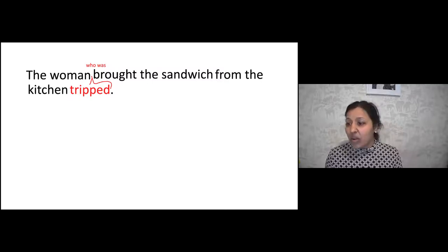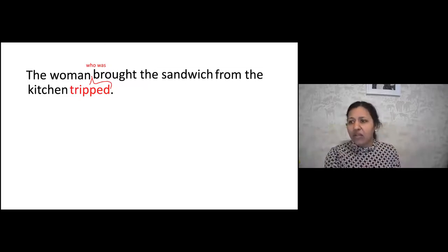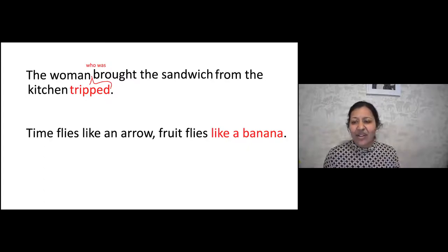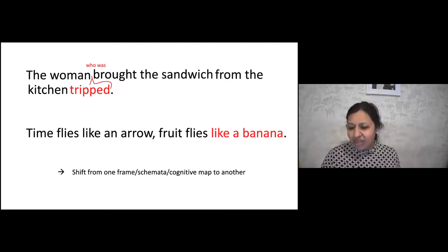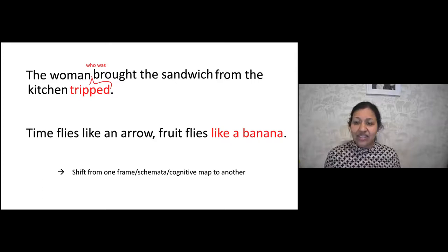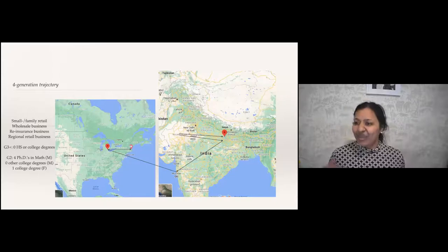The way to interpret it is that the woman tripped, and she was the one brought from the kitchen — this is what you call a classic garden path sentence in cognitive science. It causes a reorientation in your brain of how to understand the previous parts of the sentence. Here's another one: 'time flies like an arrow, fruit flies like a banana.' These garden path sentences involve a mental shift from one frame of understanding to another — related to cognitive maps. We do the mathematics and analysis of how the brain represents these kinds of pieces of information.